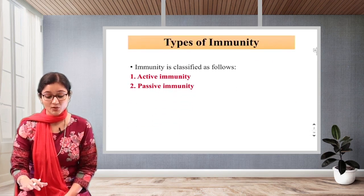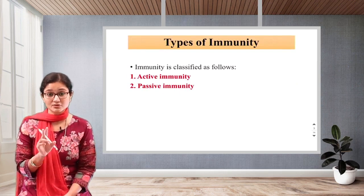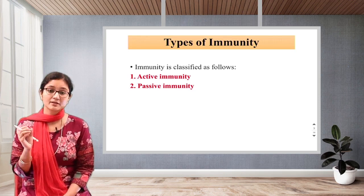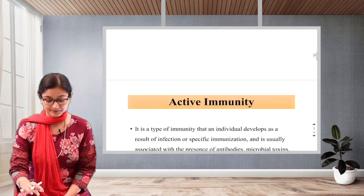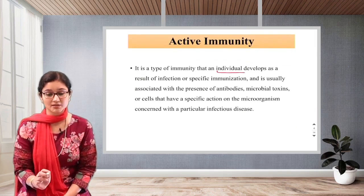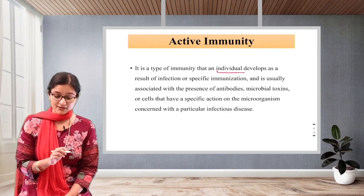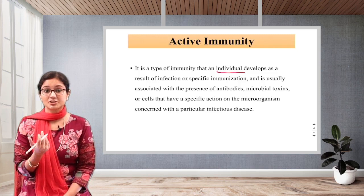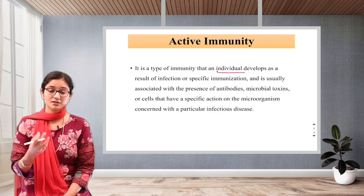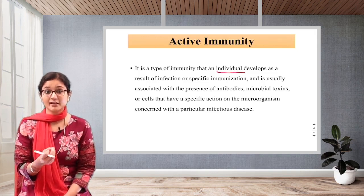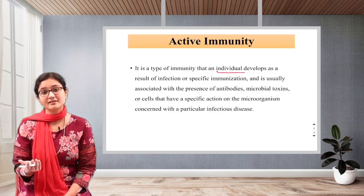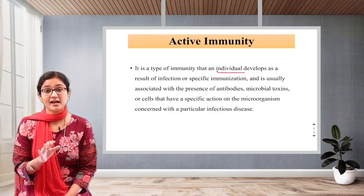Let us understand what are the types of immunity. There are mainly two types: one is active and the second is passive immunity. Active immunity is a type of immunity that an individual develops as a result of infection or specific immunization. For example, in childhood many people suffer from chickenpox. Whenever we get that particular virus, our body develops antibodies against it and still remembers. Once a person has had chickenpox, it is very rare for them to develop it a second time — that is active immunity.